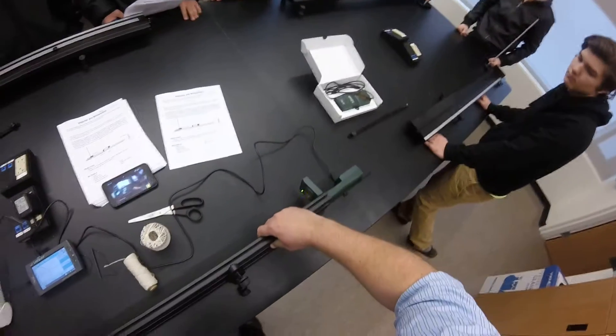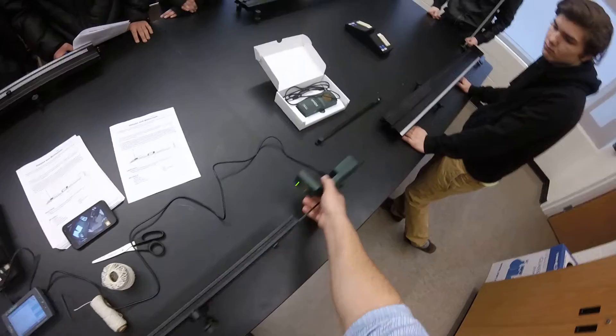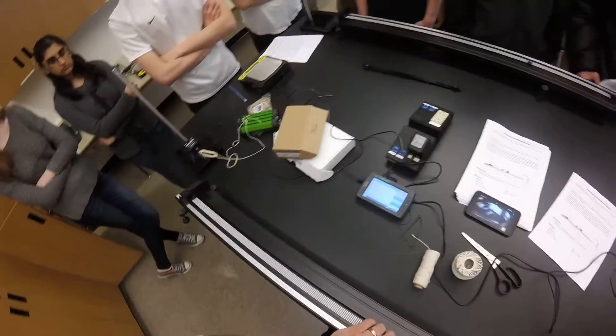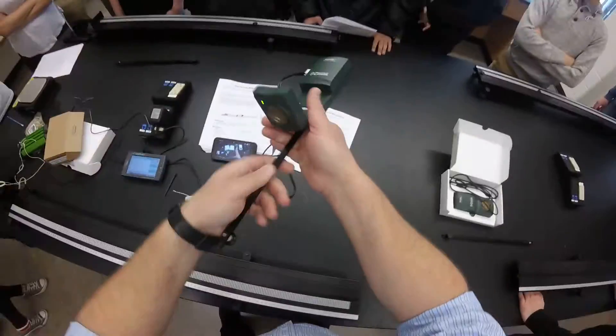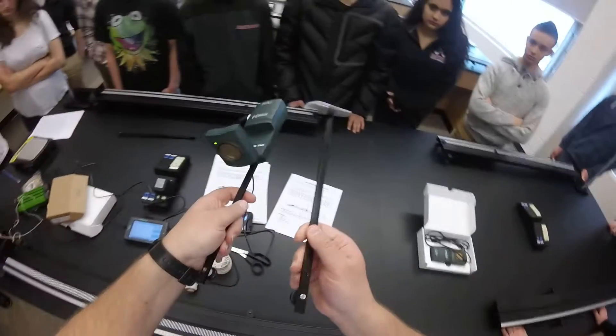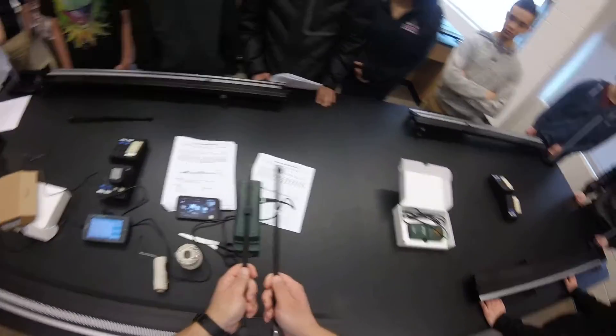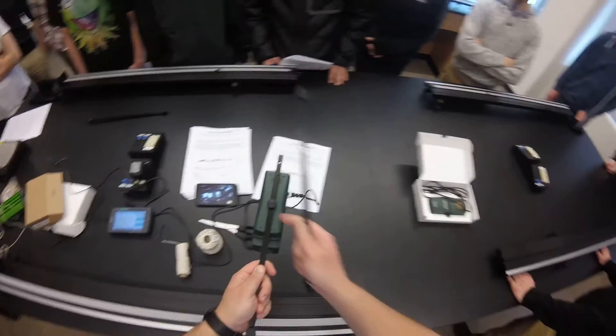If I flip this over, you can see that the motion detector is attached using this rail, okay? And then, so when you get your motion detector, you can look at this one. I'll leave this set up so you can look at it.